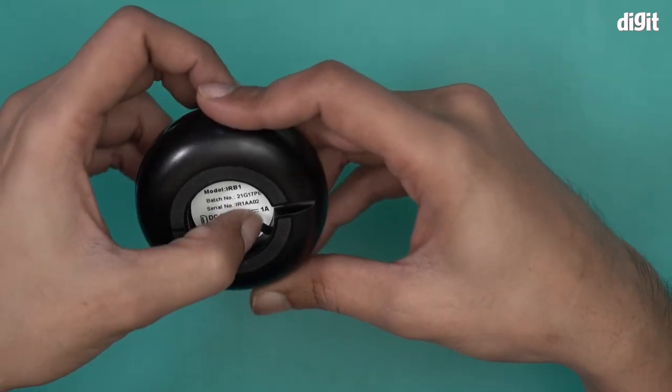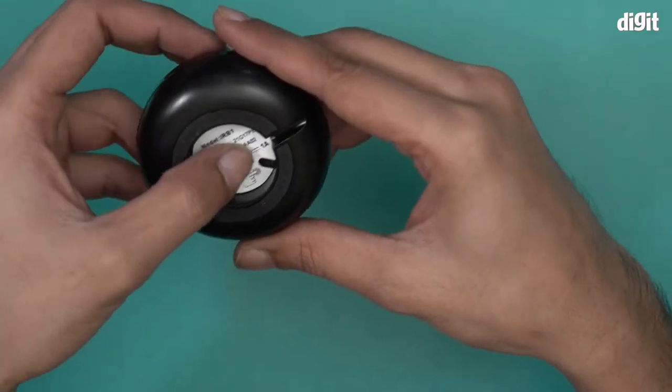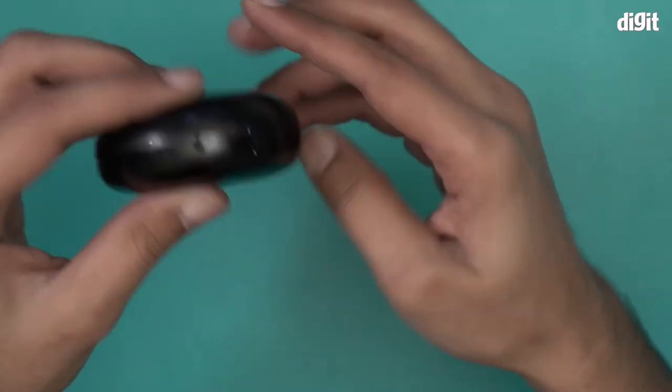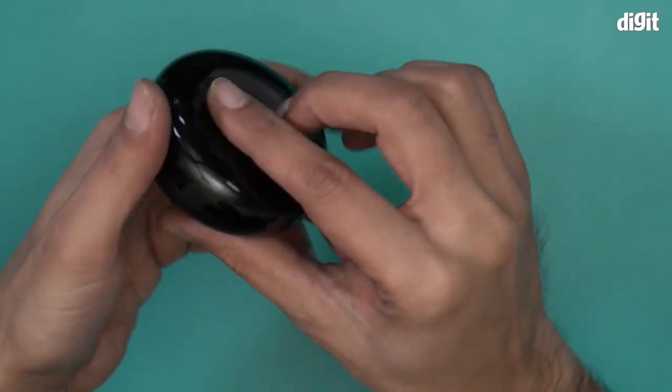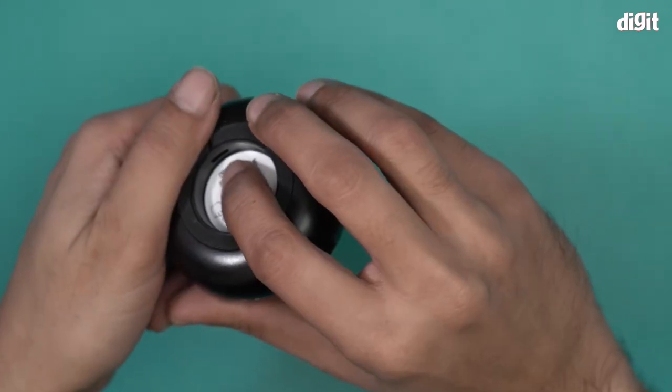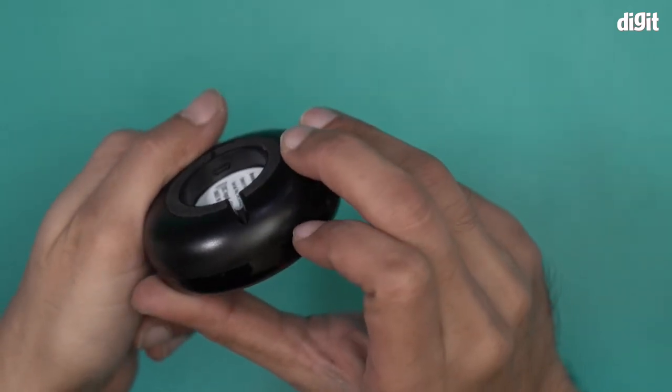There's also a reset button. I think this is the on/off button for when you want to use it. How do you charge it? Let's quickly find that out. Yeah, the charging port is over here.